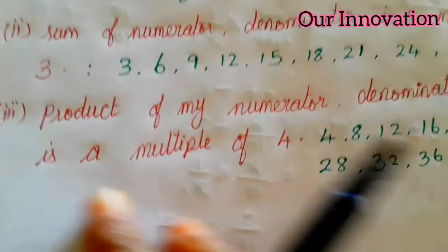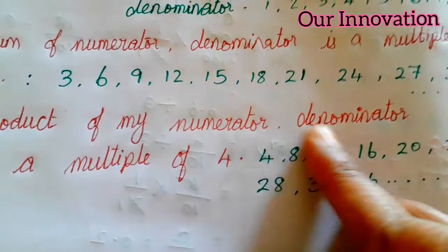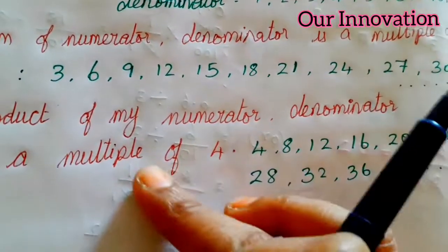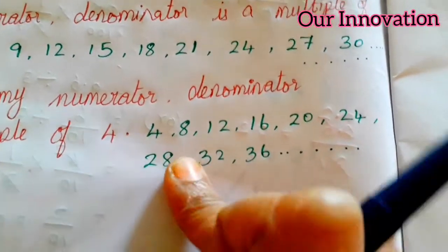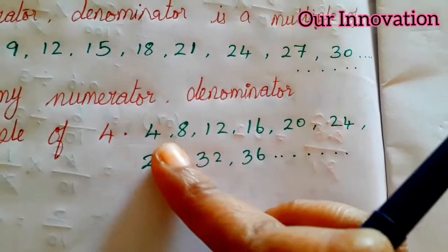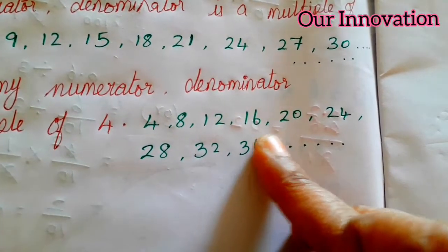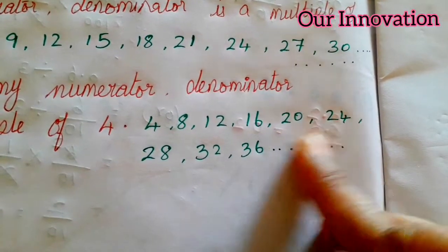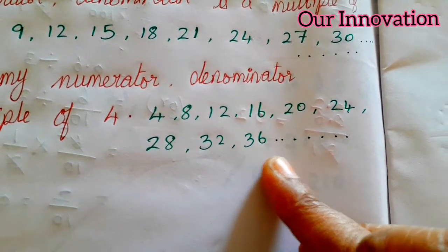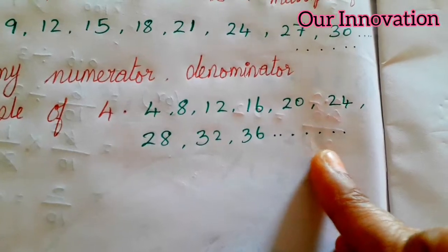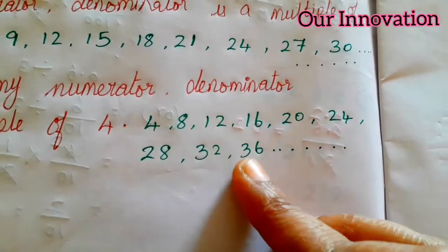That's why the product of my numerator and denominator is a multiple of 4. Now multiples of 4 are: 4, 8, 12, 16, 20, 24, 28, 32, 36. So x is a multiple of 4.